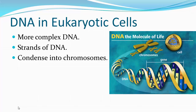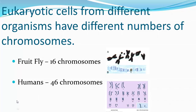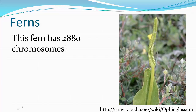What do we mean by more complex DNA in a eukaryotic cell? Instead of having a ring of DNA like prokaryotes, eukaryotes have strands of DNA that condense into chromosomes. The number of chromosomes varies: a fruit fly has 16, humans have 46, and this fern has 2,880 chromosomes. So just because you're more complex, like humans, doesn't mean you necessarily have more chromosomes.